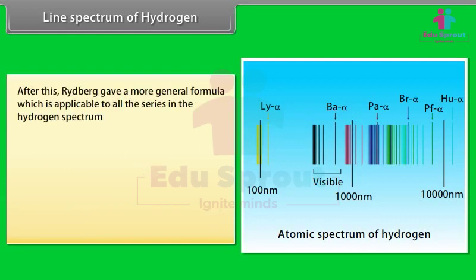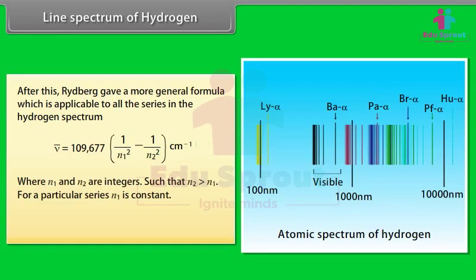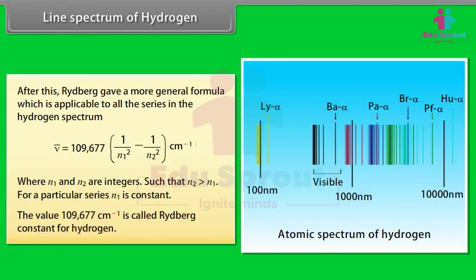Rydberg gave a more general formula applicable to all series in the hydrogen spectrum: wave number = 1,09,677 × (1/n₁² − 1/n₂²) per centimeter, where n₁ and n₂ are integers such that n₂ > n₁. For a particular series, n₁ is constant. The value 1,09,677 cm⁻¹ is called the Rydberg constant for hydrogen.